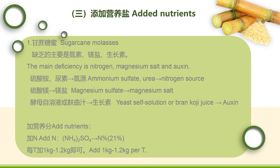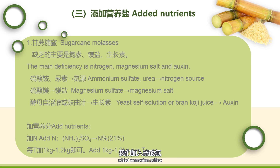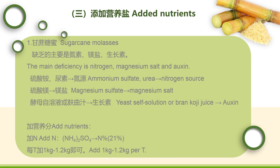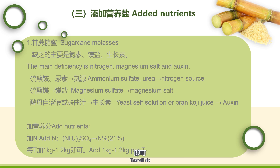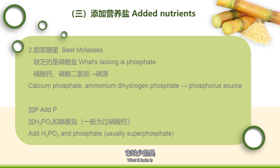第三步骤是添加营养盐。原糖蜜中缺乏酵母繁殖发酵所需的一些营养元素，需要另外添加。甘蔗糖蜜缺乏的主要是氮素、铁盐和生长素；缺乏氮可加入硫酸铵或尿素，铁盐缺乏可加入硫酸铁，生长素缺乏可加入酵母汁溶液或孵化液。例如添加硫酸铵可使氮的比例达到21%，每吨糖蜜加1.0至1.2千克。甜菜糖蜜缺乏的是磷酸盐。